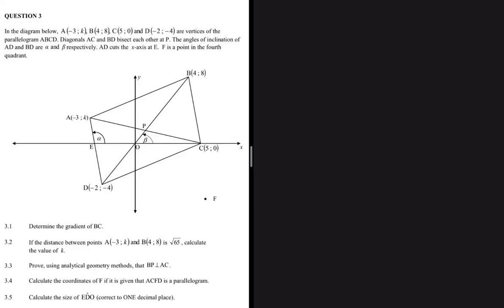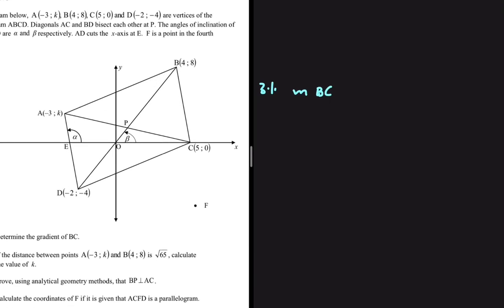The question starts off really weak with 3.1, just asking us to find the gradient of BC. We are given all the coordinates of B, and we are also given the coordinates of C. So we're supposed to substitute directly — no trickery whatsoever.